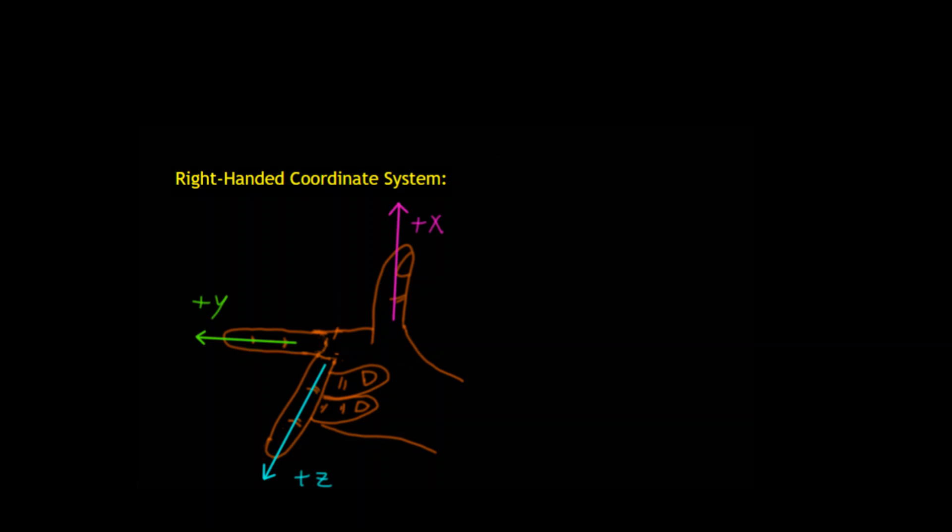The point of this is to give the directions of the positive axes of a right-handed coordinate system. When you make this shape, your thumb is pointing in the direction of the positive x-axis, your pointer finger is pointing in the direction of the positive y-axis, and your middle finger is pointing in the direction of the positive z-axis.